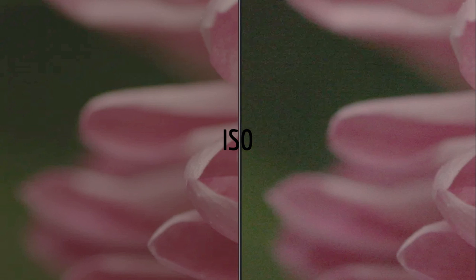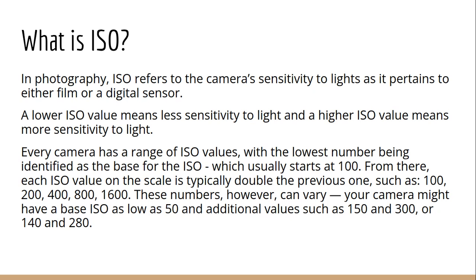Hello everyone, this video will be on ISO — what it is and how it affects certain aspects of photography, and when it is best used. ISO in photography refers to the camera's sensitivity to light, as it pertains to either film or the digital sensor. A lower ISO value means less sensitivity to light, and a higher ISO means more sensitivity to light.